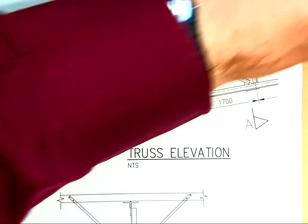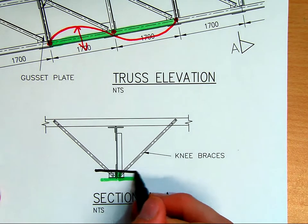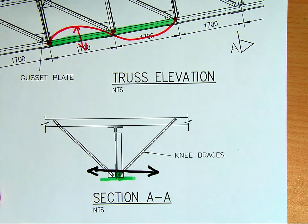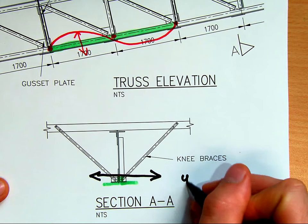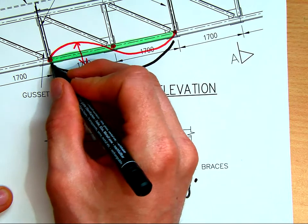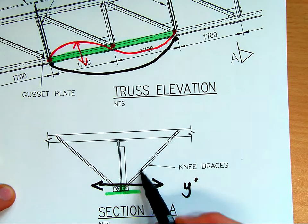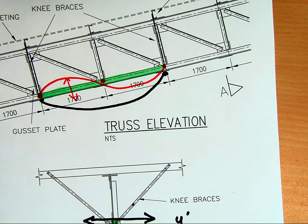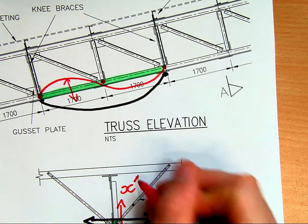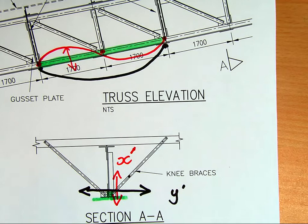However, if we squash this and it tries to buckle sideways, it's only prevented from moving sideways at the position of the knee braces. So then for what we'll call soon the YY axis, it'll be from there to there, the full 3.4 meters, because there's nothing preventing sideways movement. So that's for our Y primed axis, and then up or down, we'll call the X primed axis.